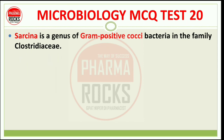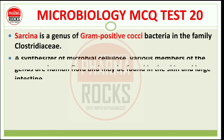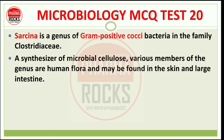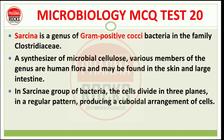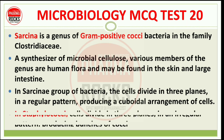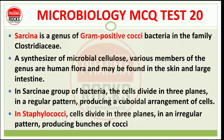Various members of the genus are human flora, found in the skin and large intestine. In Sarcinae group of bacteria, the cells divide in three planes in a regular pattern, producing a cuboidal alignment of cells. In Staphylococcus, cells divide in three planes in an irregular pattern, producing bunches of cocci.